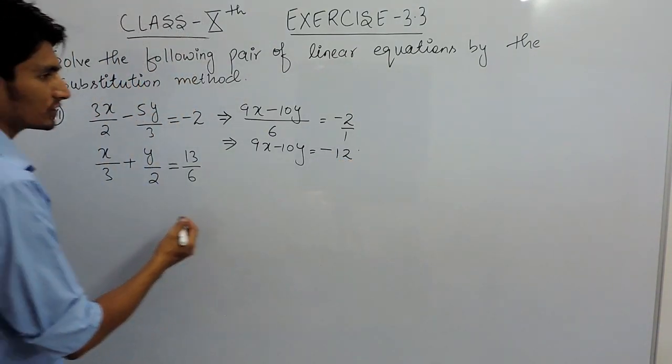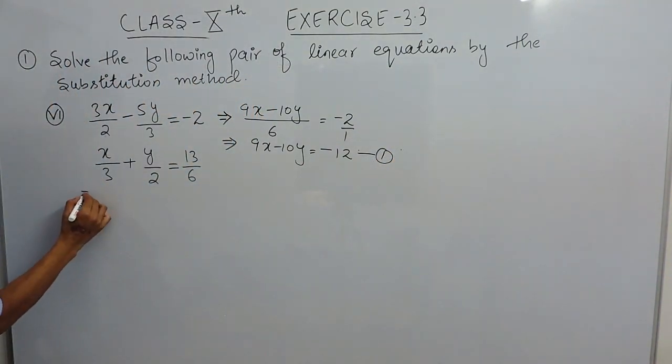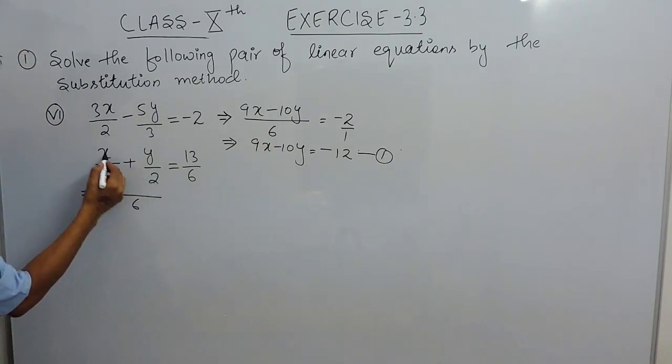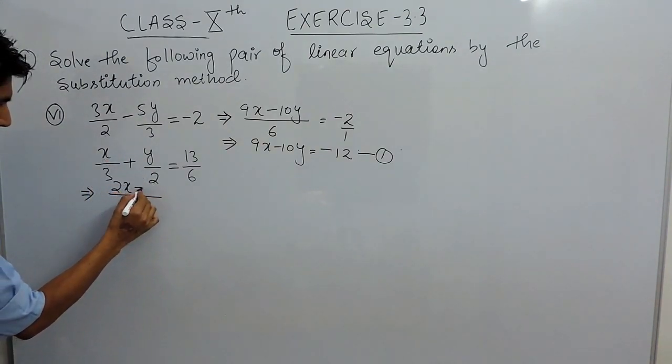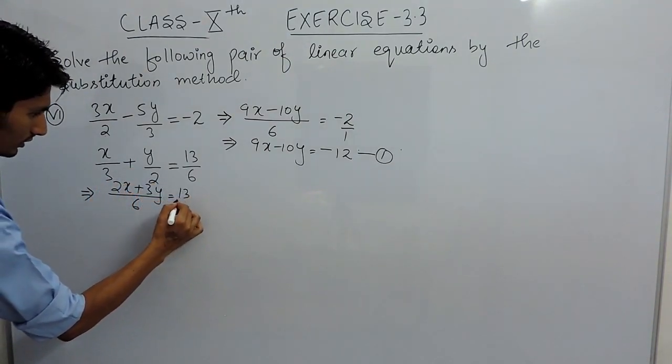Now our equation has become this much. Similarly, you can solve this also. Again you have to take LCM, and you can multiply this with this, this with this, and this is 30 upon 6.